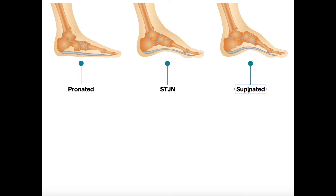In the supinated state, we have the opposite. When the subtalar joint goes into the supinated state, that has effects downstream on the other tarsal bones. Generally speaking, those tarsal bones come closer together — they get locked. That's going to make them more stable and more rigid. So the pronated foot, with more space between tarsal bones, is going to be better for shock absorption and for accepting weight. Whereas the supinated foot, where the tarsal bones are closer together and locked and rigid, is going to be better really for pushing off.